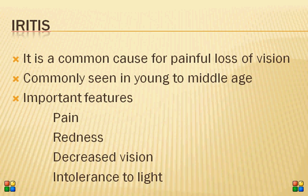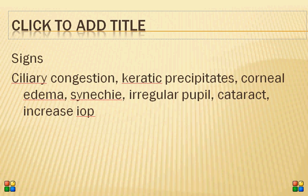The typical age of presentation is young to middle age, though elderly patients can occasionally be affected. The important features of iritis, iridocyclitis, or anterior uveitis — which includes the iris, ciliary body, and choroid — are pain, redness, decreased vision, and intolerance to light, developing over a period of a few days. These are the typical symptoms, and most patients are able to recognize them.